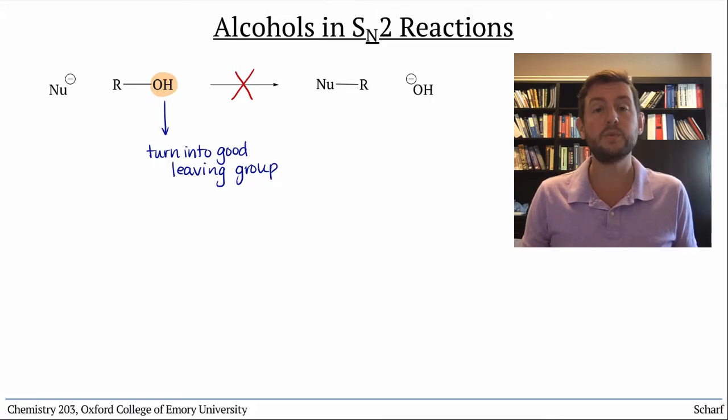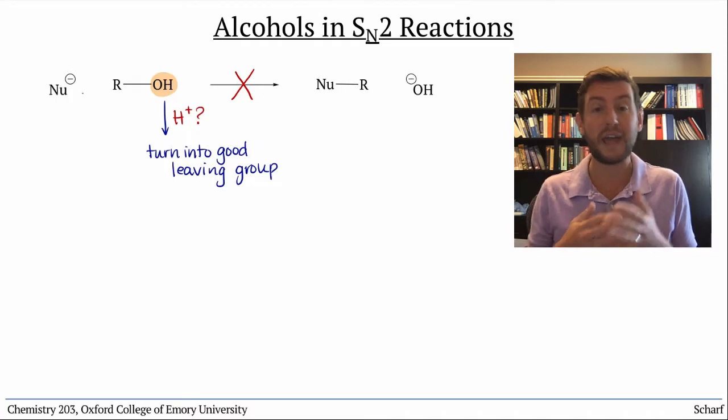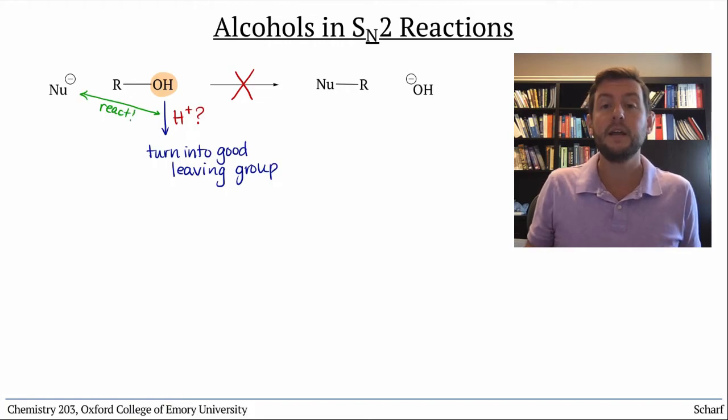In the SN1 reaction, we did this by protonating the OH with strong acid. But if we're substituting by an SN2 mechanism, which requires strong nucleophiles, strong acids aren't an option, because they'd probably just protonate the strong nucleophile. There are a number of strategies to get around this, and to turn OH groups into good leaving groups.